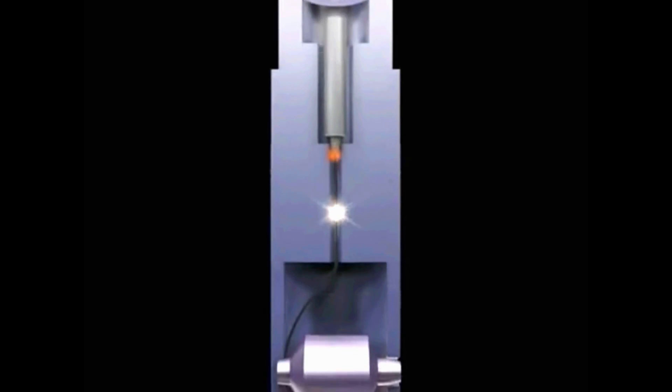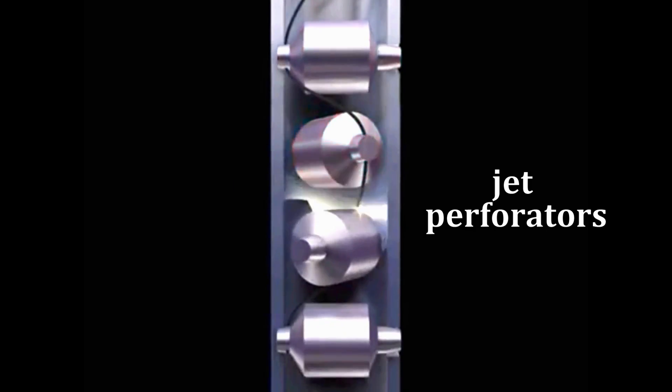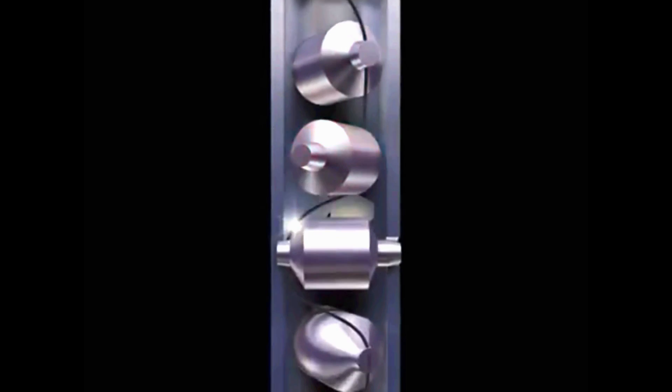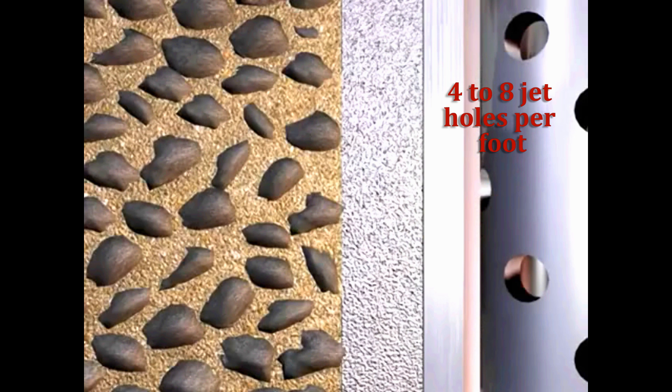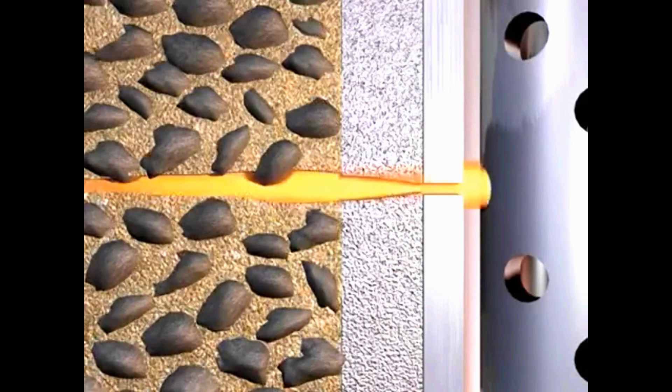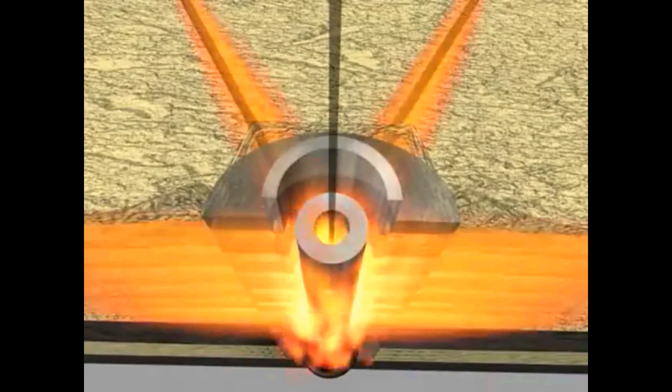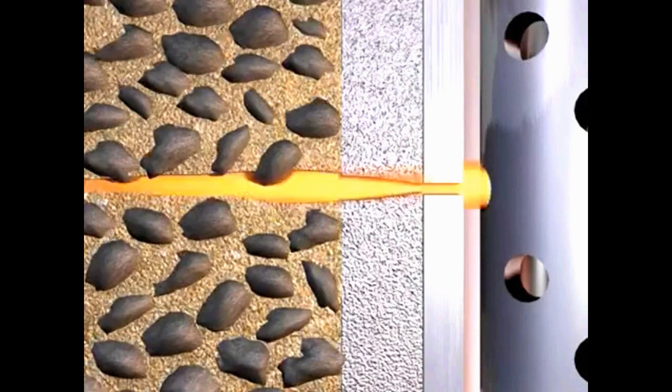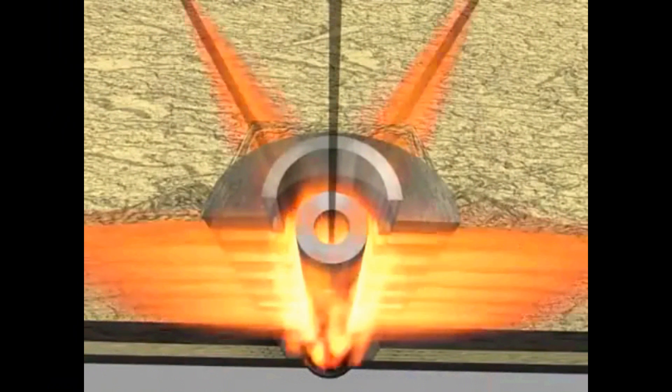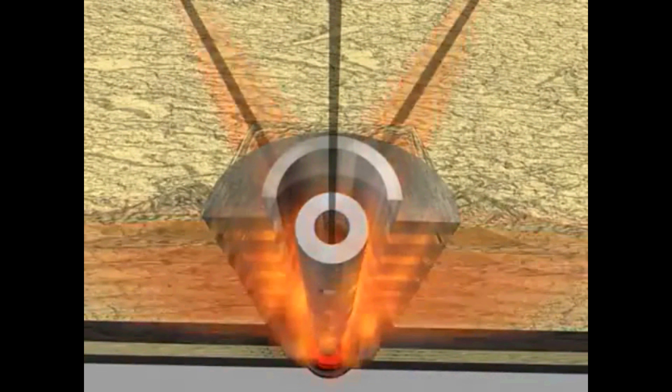To blast through the casing and cement, jet perforators are set to blast on average 4 to 8 jet holes per foot. Each shot is rotated 90 degrees or 180 degrees from the one above throughout the pay zone. To blast these jet perforators through the casing and out into the formation, casing guns are used.